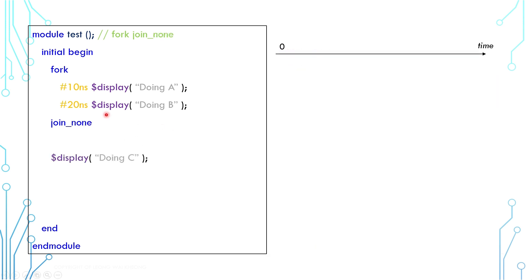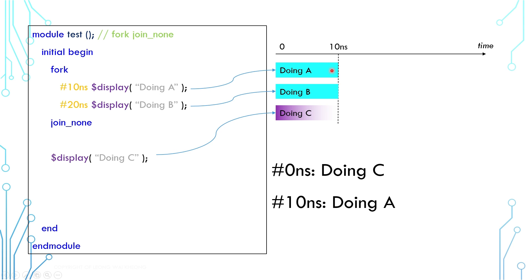Now, this is a fork join_none construct. Fork join_none does not wait for any of the threads. It launches the threads within and continues thereafter. In this example, A and B start at time 0. Without waiting for A and B to finish, C also starts at time 0. After that, A finishes at 10 nanoseconds and B finishes at 20.